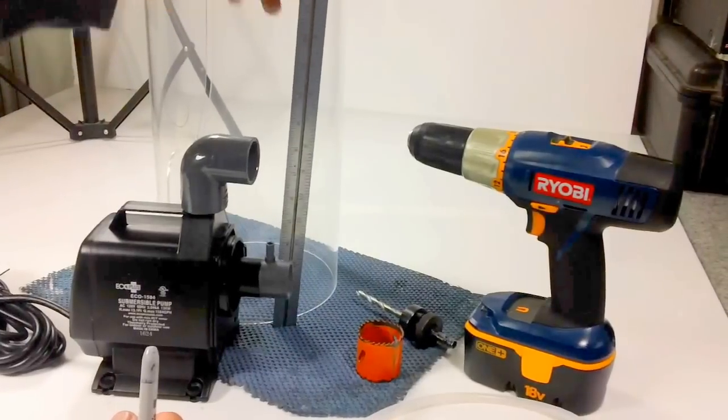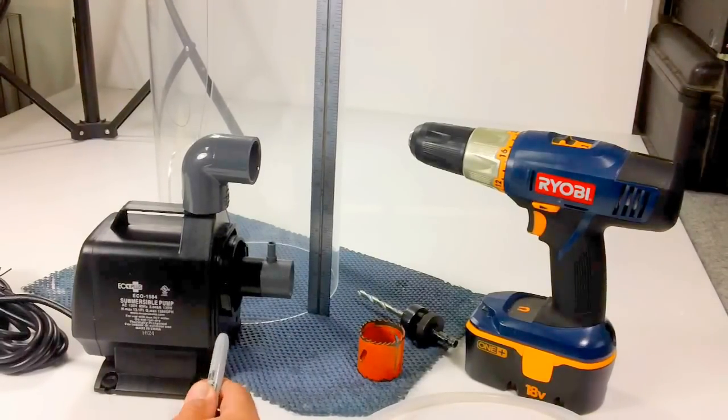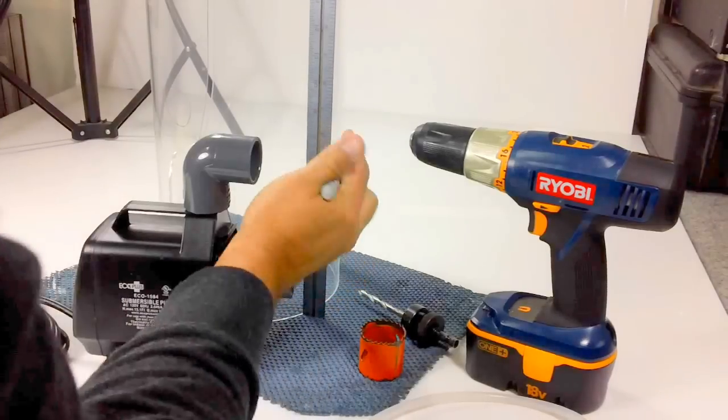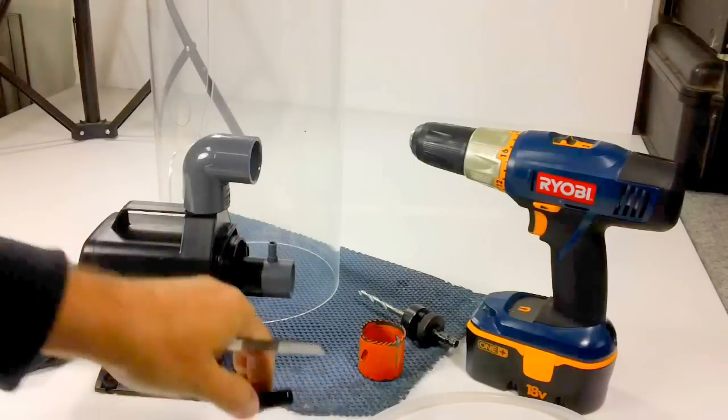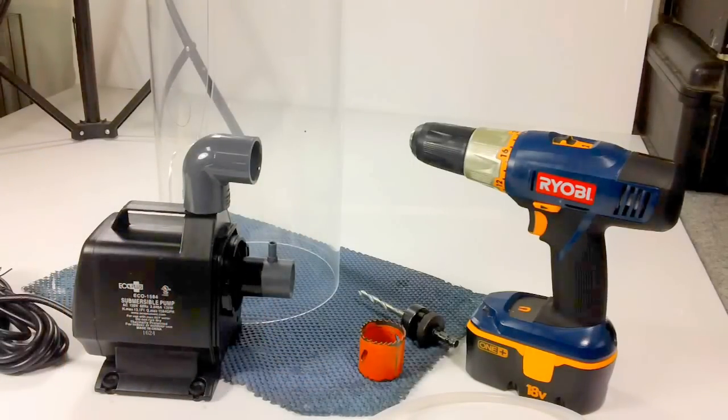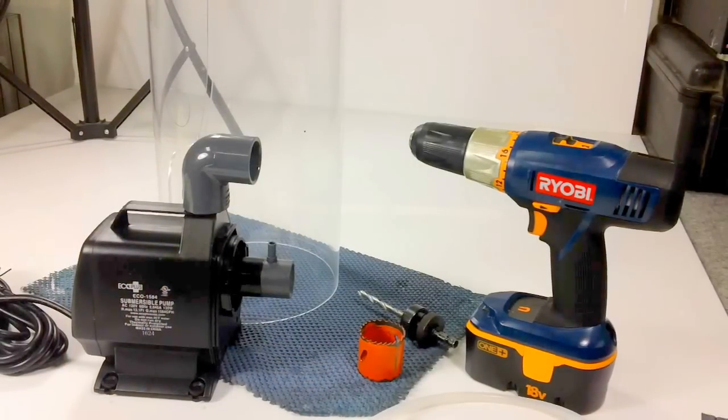What I'm going to do is I'm going to come over to the protein skimmer, I'm going to put the ruler up next to it, and I'm going to make a mark at eight and one-eighth inches, right there. So, that's the center of the hole, that's where I want to drill the hole, to put the uniseal and the pump fitting.